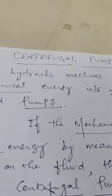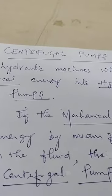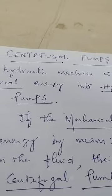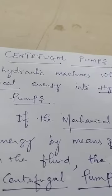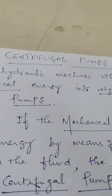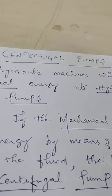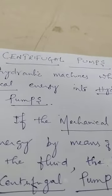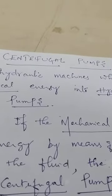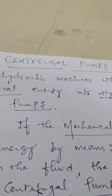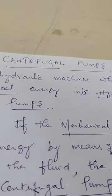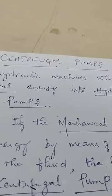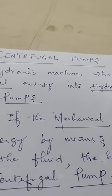Welcome to today's topic: centrifugal pumps. You have already studied hydraulic machines, that is turbines. The difference between turbines and pumps is simple — a turbine converts hydraulic energy into mechanical energy, while a pump converts mechanical energy into hydraulic energy, which is actually pressure energy. By this pressure, we can lift water to the required height. A pump is a hydraulic machine which converts mechanical energy into hydraulic energy.